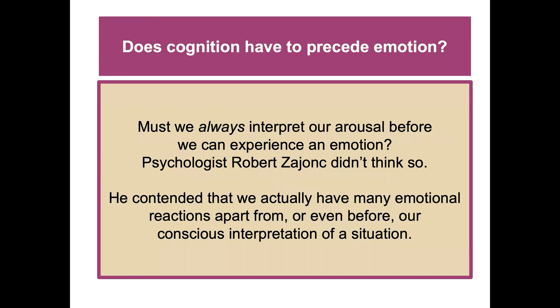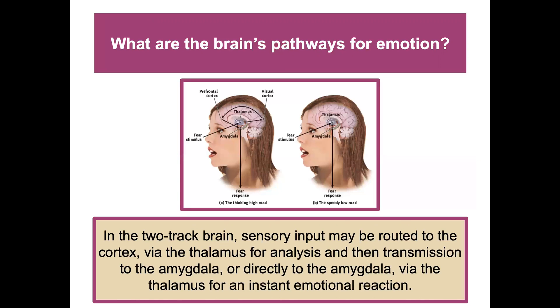Does cognition have to precede emotion? Must we always interpret our arousal before experiencing an emotion? Psychologist Robert Zajonc didn't think so — he contended that we have many emotional reactions apart from, or even before, our conscious interpretation of a situation. In our two-track brain, sensory input may be routed to the cortex via the thalamus for analysis and transmission to the amygdala.